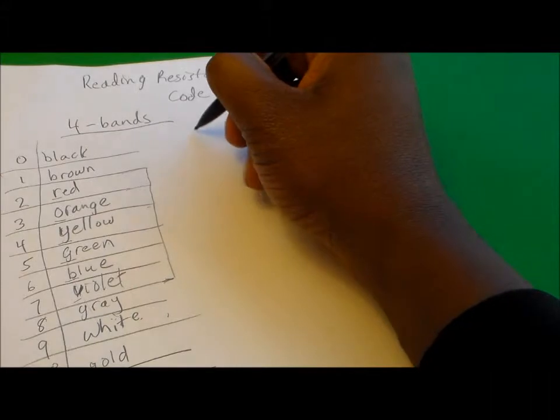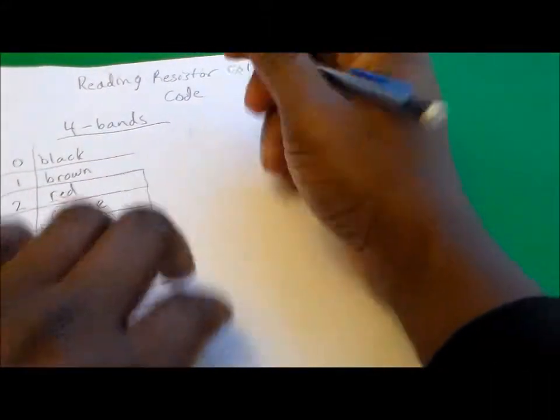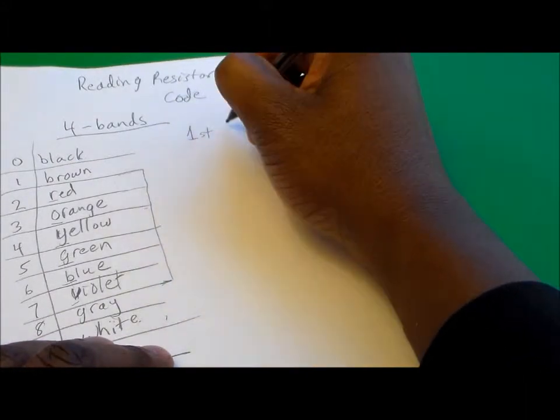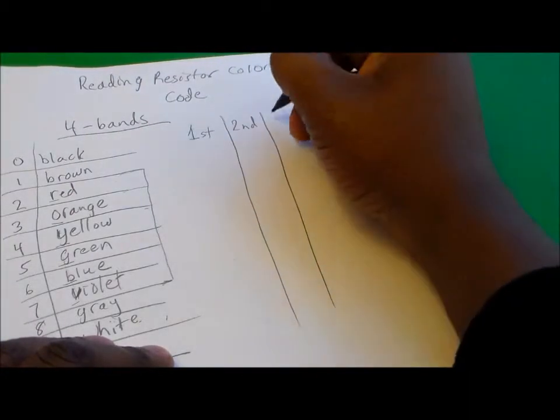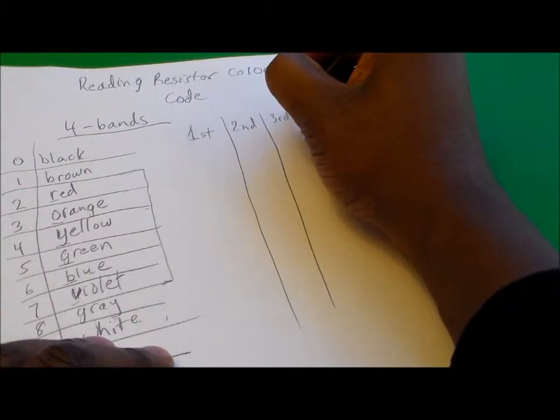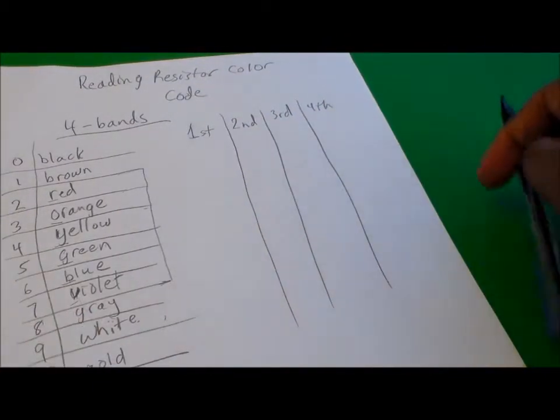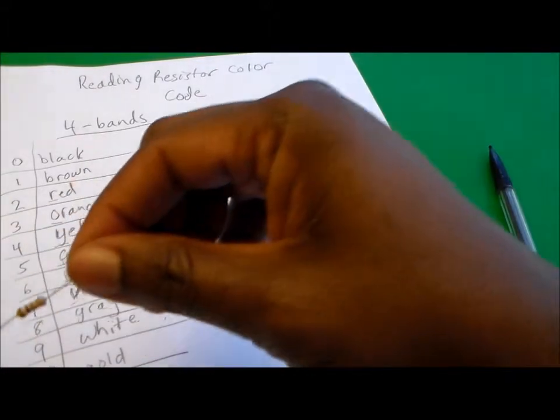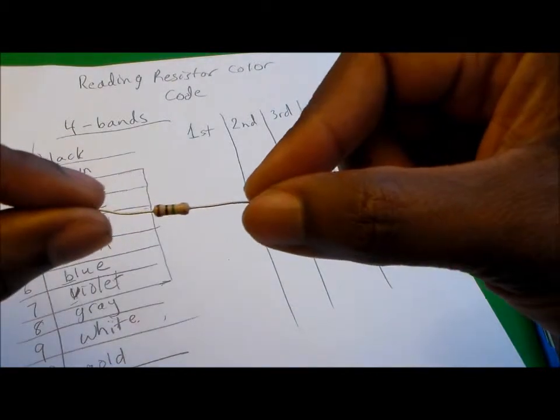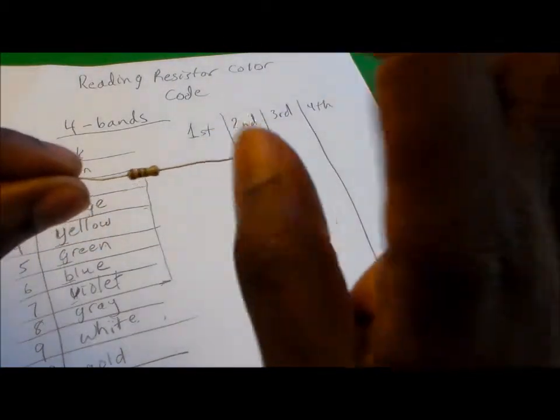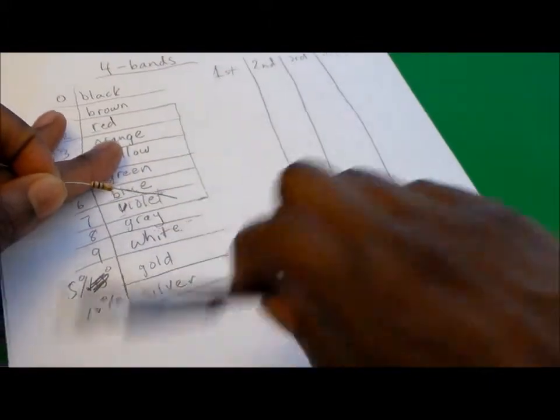Now we have our color codes, and we have four bands. Let's say we have band number one, the first band, then band number two, the second band, the third band, and then the fourth band. Let's start with how to position the resistor when we're reading the colors.